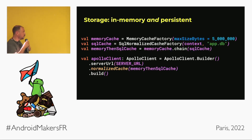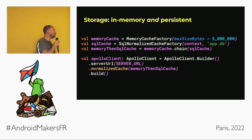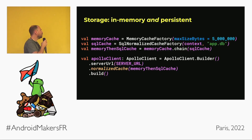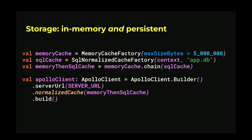You can also use both by chaining them together. That gives you good performance because you'll use the memory cache as much as possible, which is very fast, and then fall back to the SQL cache on a cache miss, and then fall back to the network.